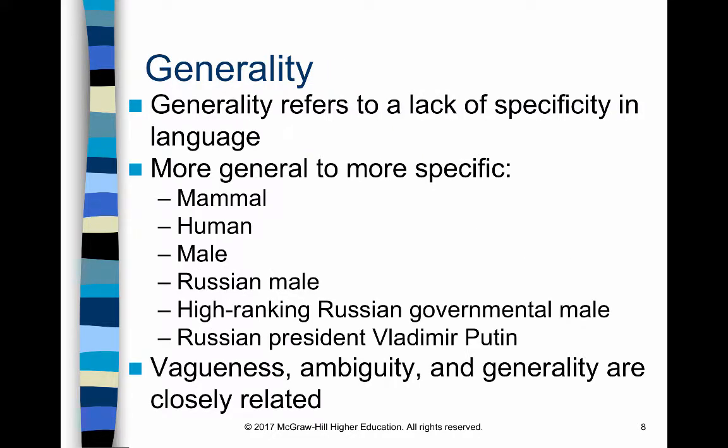Generality refers to a lack of specificity in language. When you're too general, you don't give enough details for the audience to truly understand what or who you're referring to. A term that refers to all members of a group is more general than one that refers to specific members. It gets more specific as you refer to fewer members of a group. For example, moving from extremely general to individually specific: 'Mammal' — any mammal. 'Human' — narrowed down, but still any human. 'Male' — every human male.